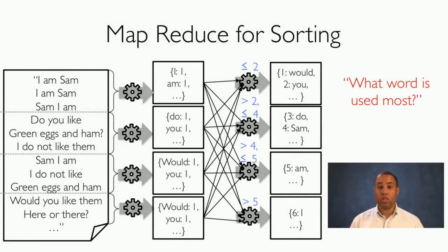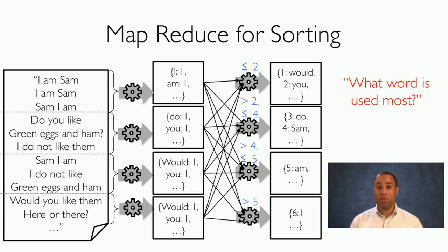We can also use MapReduce for sorting. In the reduce step, we partition across different machines based upon the number of occurrences. This allows us to answer questions such as what word is used most. For example, we send all words that occur two or fewer times to the first machine, words that occur more than two but four or fewer times to the second machine, words that occur more than four but fewer than five times to the third machine, and all words that occur more than five times to the fourth machine.